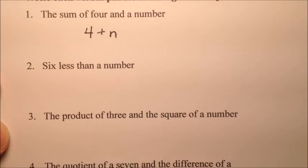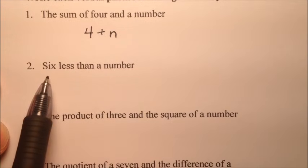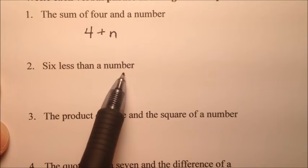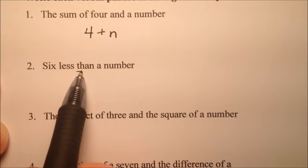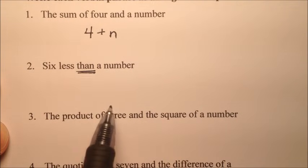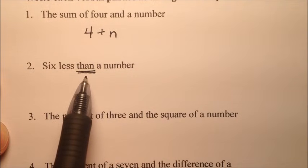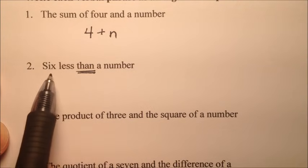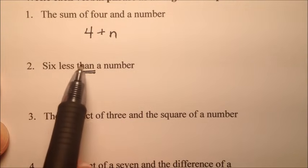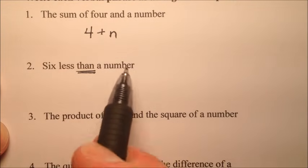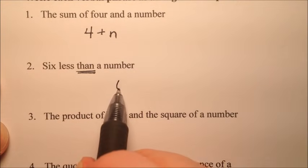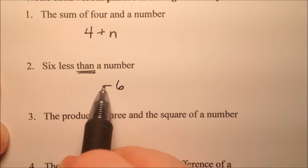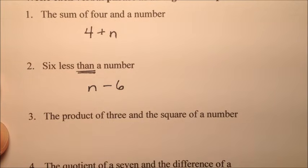Number two says six less than a number. We have the word 'than' in here, and remember that when you have the word 'than,' you've got to switch around the order. So six less than a number will end up being n minus six.